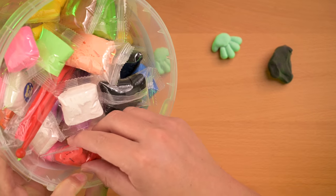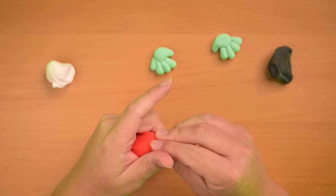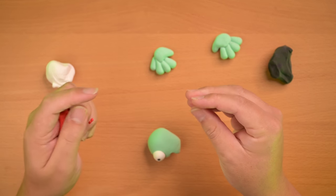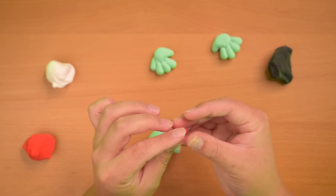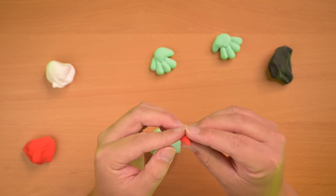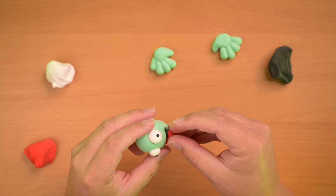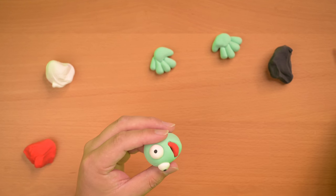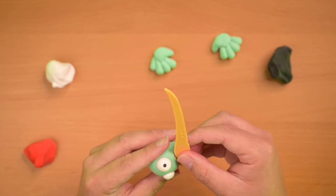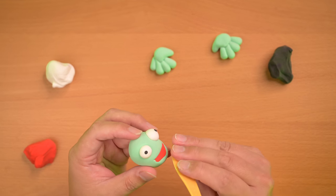So next we're going to do his mouth. So I'm gonna grab a little bit of red. Do like a little slug shape. Plop it in the mouth and grab our knife and kind of flatten it in there. Tuck it in.